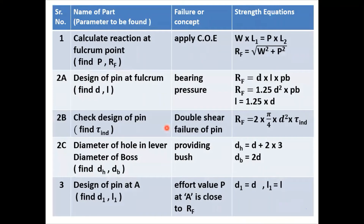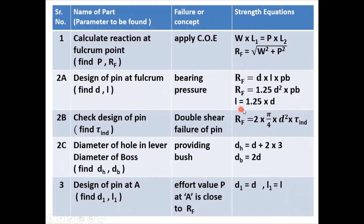We will follow this table for all five steps. Step 1 is calculation of P and Rf: first apply condition of equilibrium, then put the formula for Rf. Step 2 is design of pin at fulcrum. Considering bearing pressure failure, use the formula Rf = 1.25d² × bearing pressure, with L = 1.25d. For double shear failure of the pin, find tau induced and compare with tau permissible. Then provide a bush and find the diameter of hole and diameter of boss in the lever.